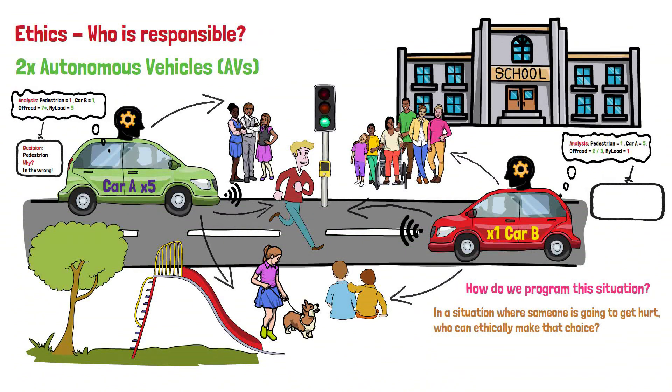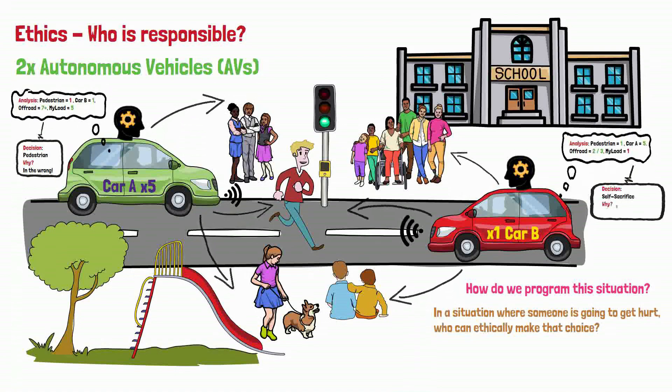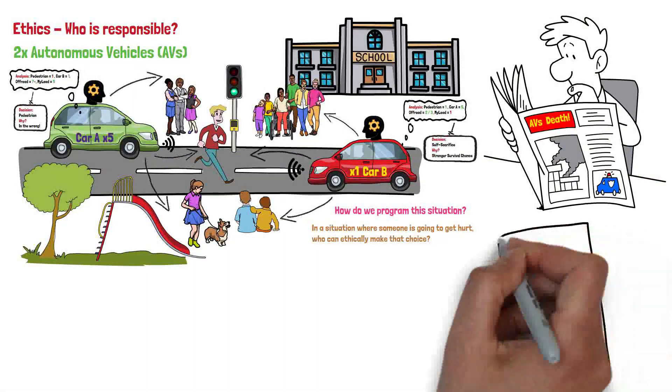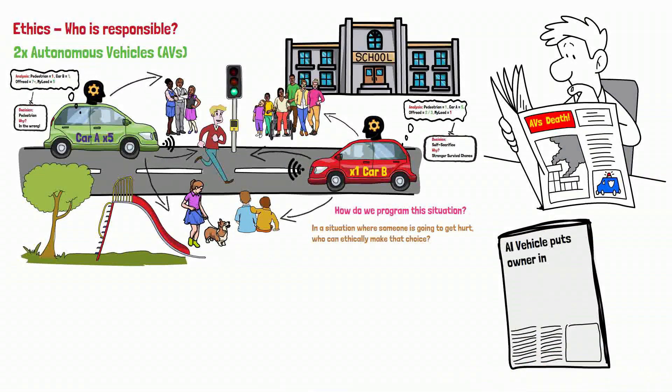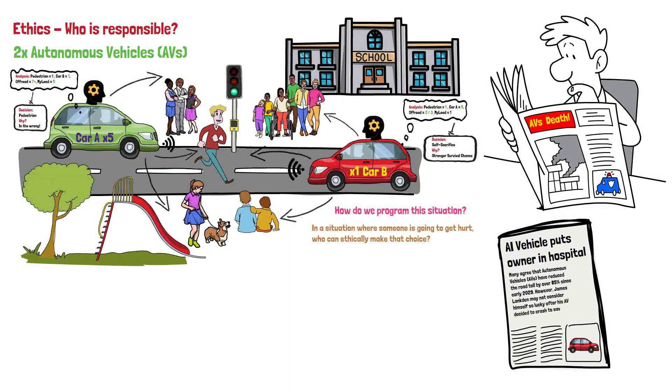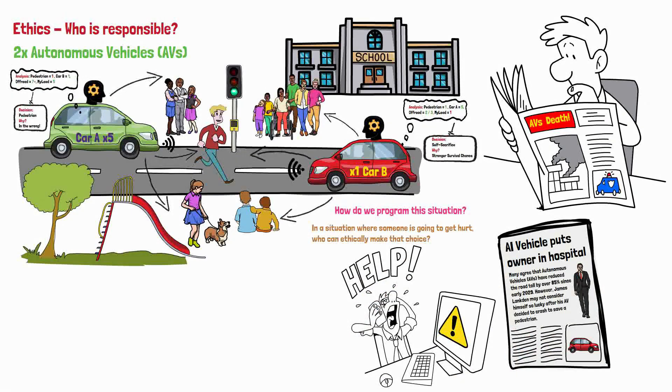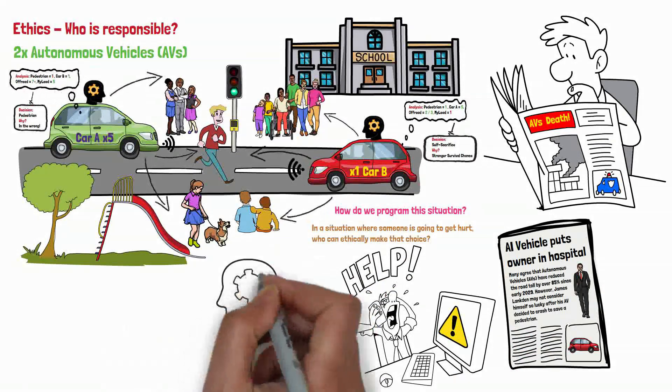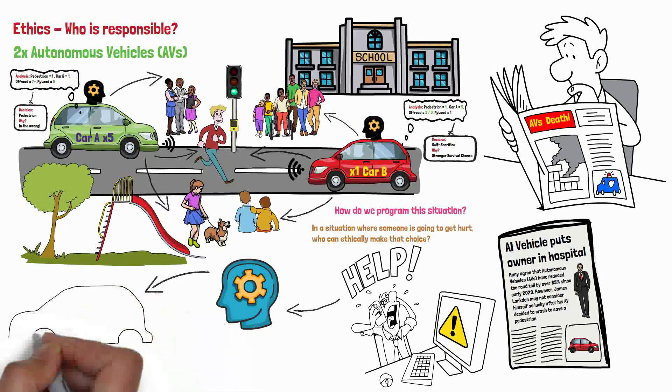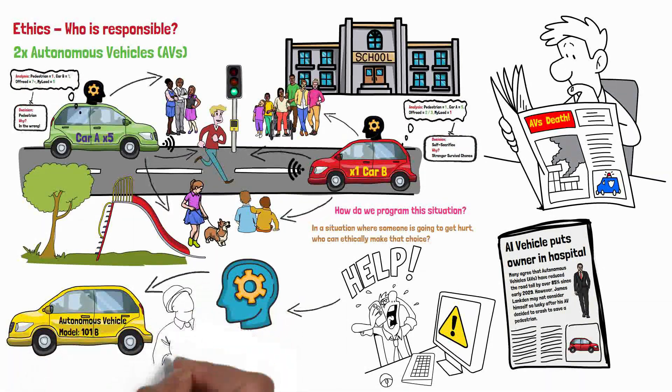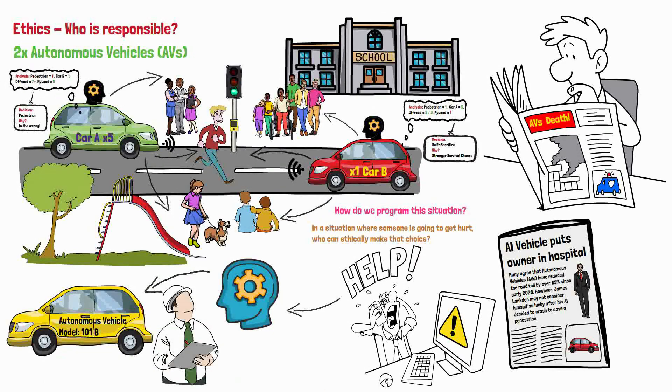Conversely, car B may choose to swerve to avoid hitting the pedestrian, as it only has one passenger. This decision may result in a negative outcome for one of the vehicles and their passengers, while potentially saving the pedestrian's life. This highlights the difficult ethical decision that autonomous vehicles may have to make, and the importance of ensuring that their programming and decision-making processes are carefully considered to minimize harm and maximize safety for all involved.